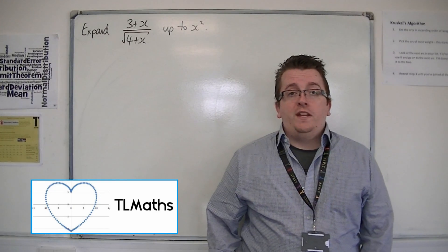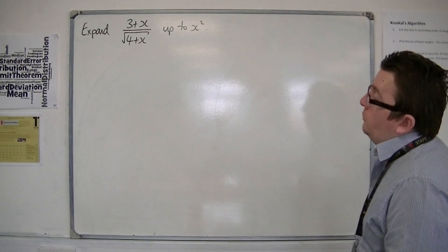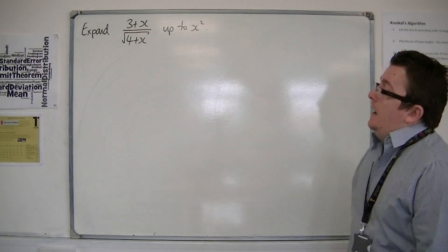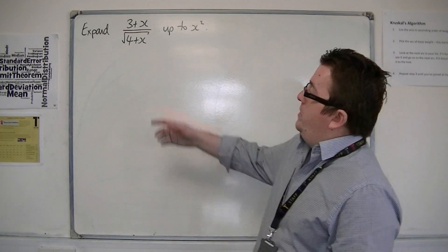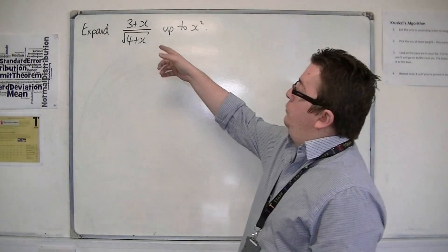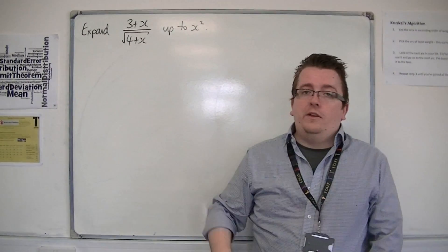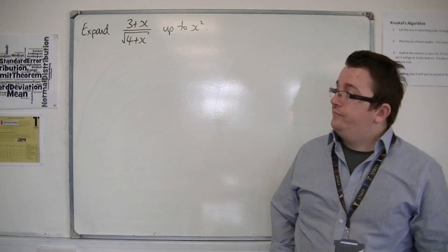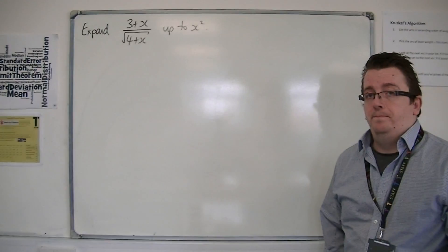In this video we are going to be looking at expanding, using the binomial expansion, (3 + x) over the square root of (4 + x). And we're going to do this up to the x squared term.